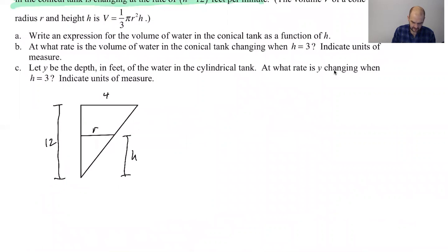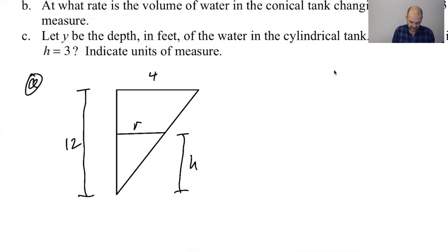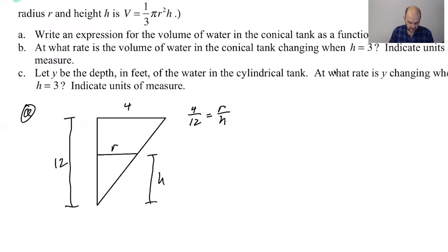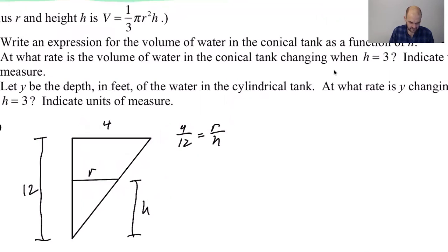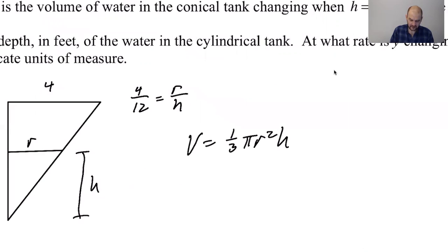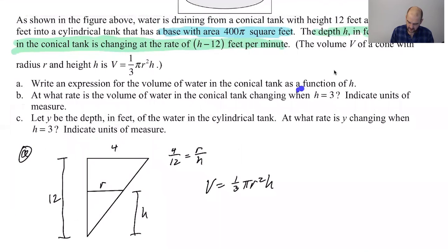So we're doing part A. So from the picture, I know that four over 12 is R over H. And I can use this to either get rid of R from the volume formula or to get rid of H from the volume formula. You're almost never interested in R. You almost always get rid of R.